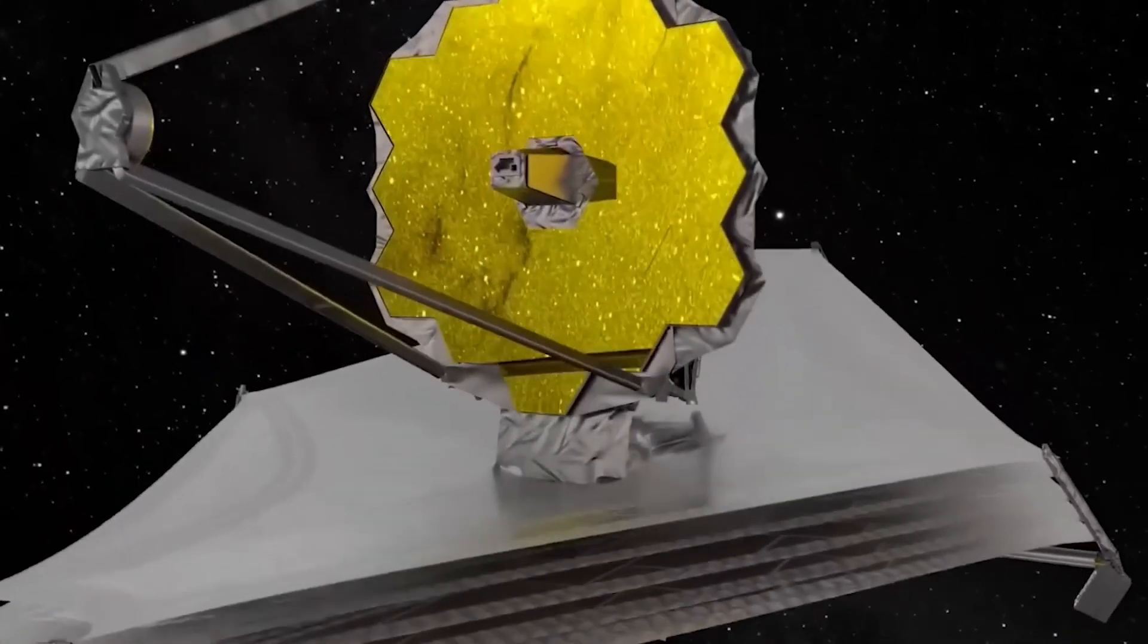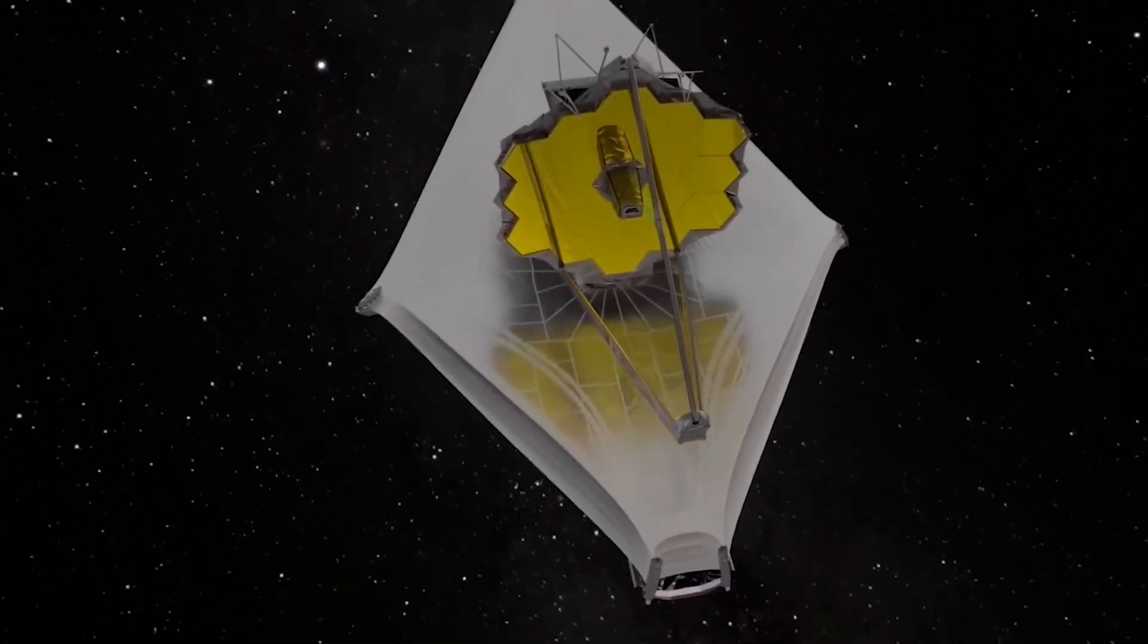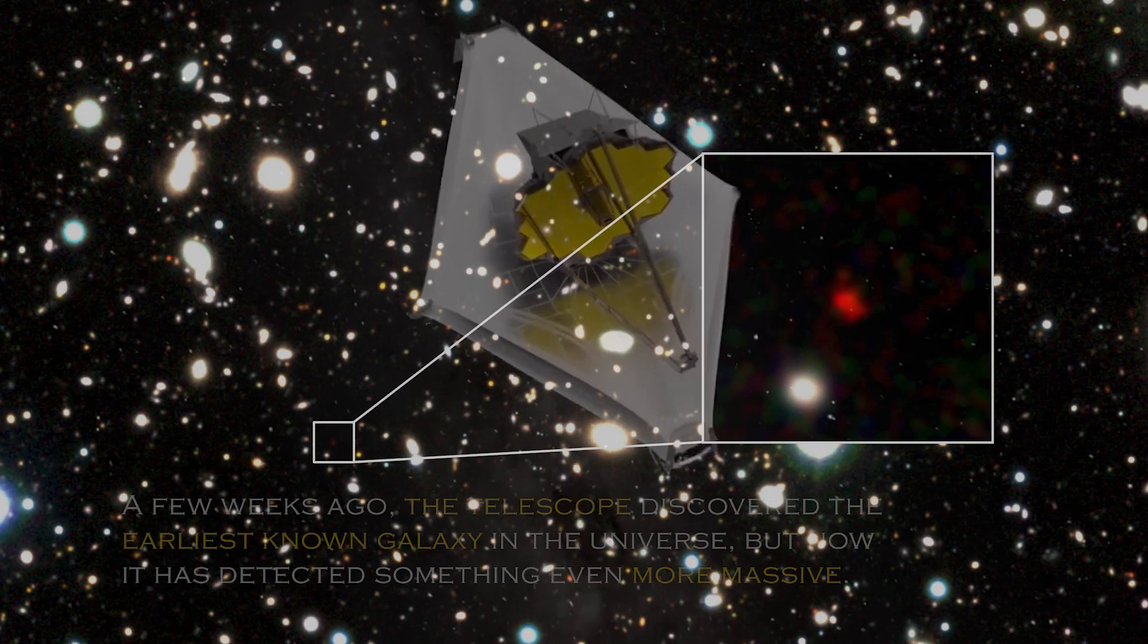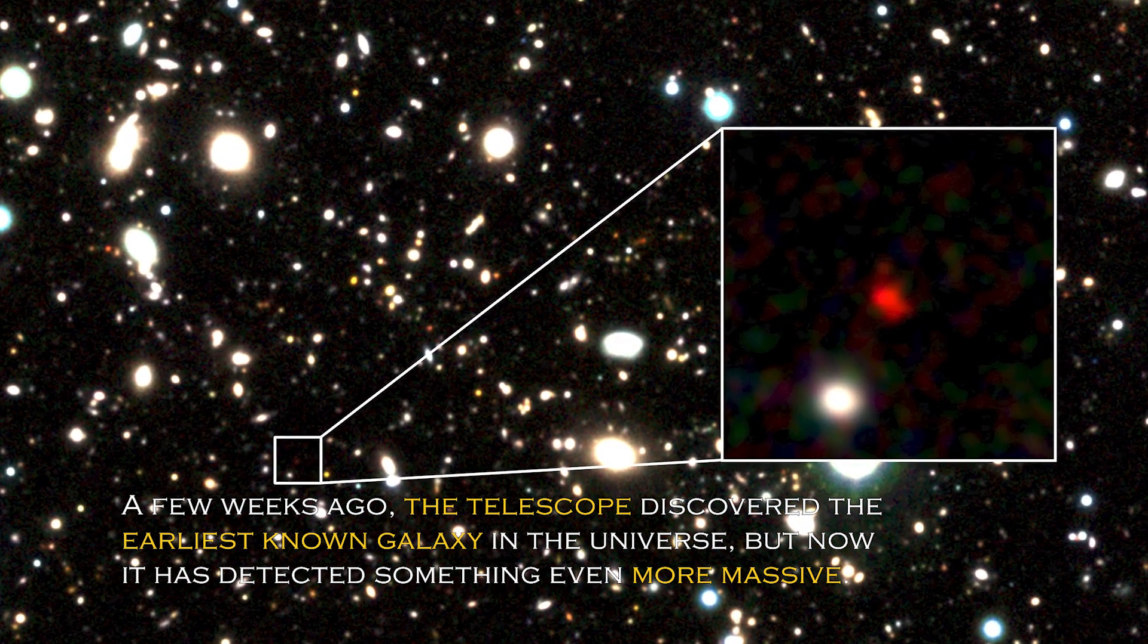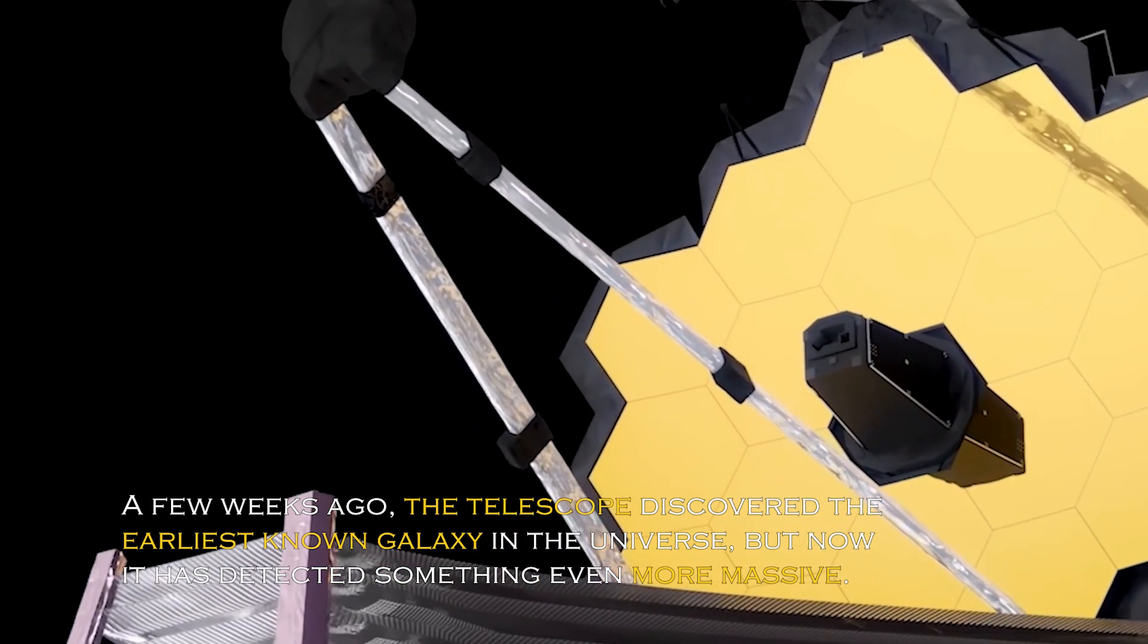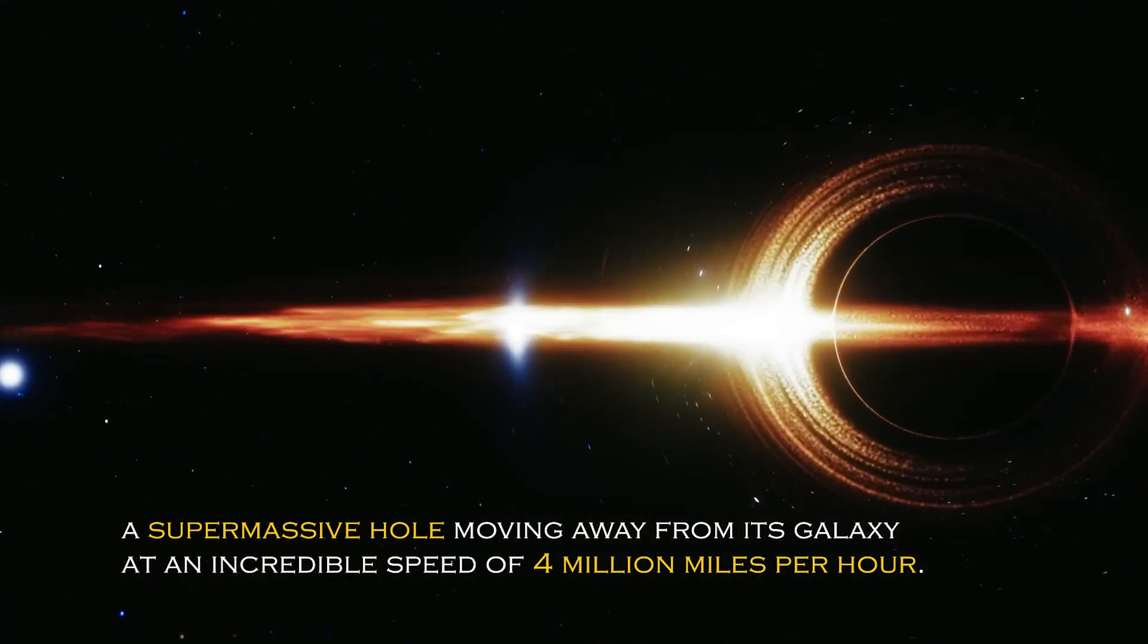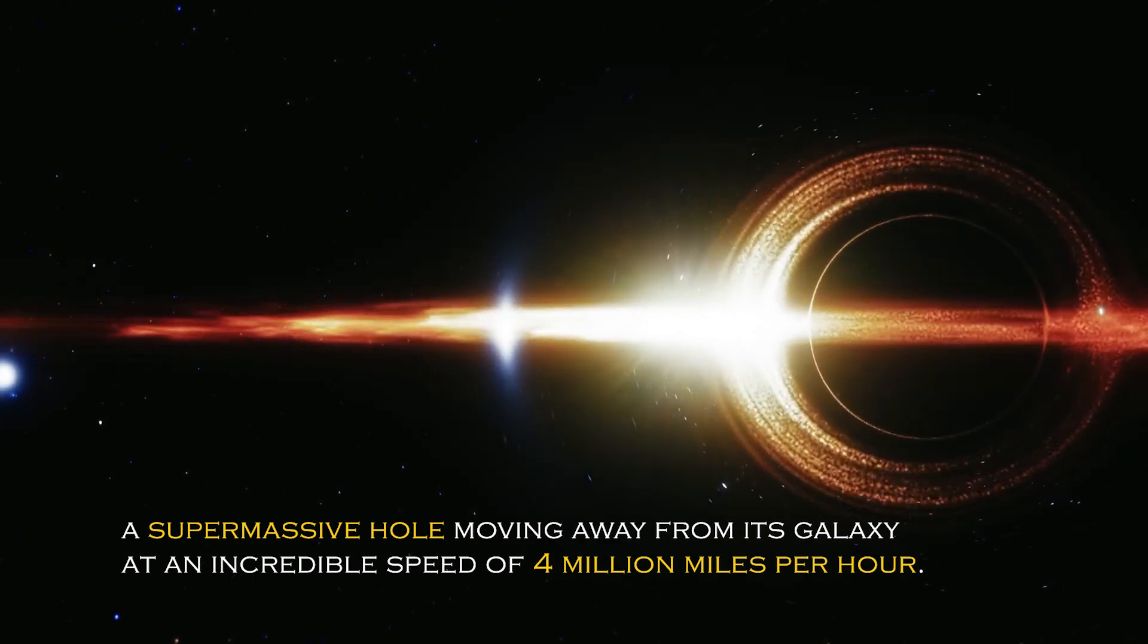In a surprising turn of events, NASA's James Webb Space Telescope has made a discovery that has astronomers around the world in awe. A few weeks ago, the telescope discovered the earliest known galaxy in the universe, but now it has detected something even more massive – a supermassive black hole moving away from its galaxy at an incredible speed of 4 million miles per hour.